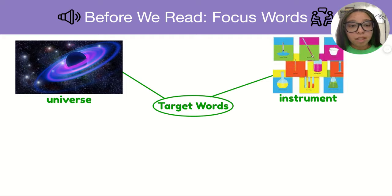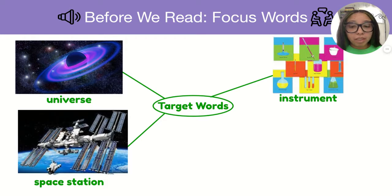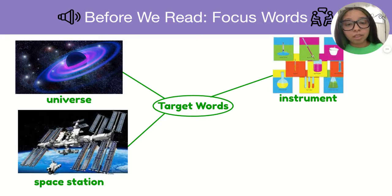Instrument. These are the tools and technologies that scientists use in order to observe, measure, and collect data of whatever they are studying. This includes instruments like the space station, where scientists can take a space shuttle to work in outer space, as well as probes, satellites, and lots of other instruments they can use while in outer space to conduct their research.